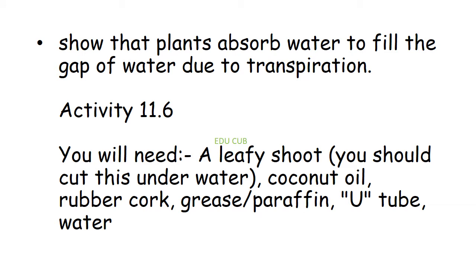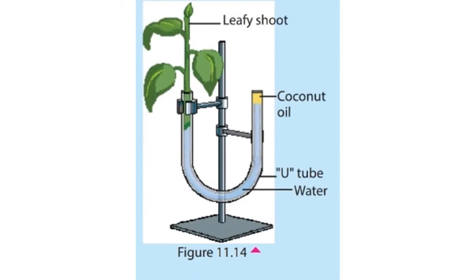We have to engage another activity to show that plants absorb water to fill the gap of water due to transpiration. You will need a leafy shoot, coconut oil, a rubber cork, paraffin or grease, a U-tube, and water. Fill the U-tube with water, cut a leafy shoot under the water, fix it to the rubber cork, and fix the cork to one arm of the U-tube. Seal it using grease and put some coconut oil at the other end. Mark the water level and after an hour, observe the water level in the arm with coconut oil.